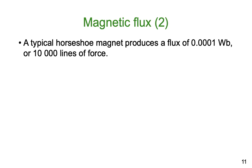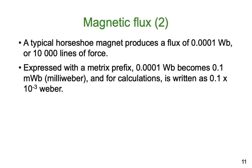A typical horseshoe magnet produces a flux of 0.001 Webers, or about 10,000 lines of force. Expressed with a prefix, 0.001 Webers becomes 0.1 milliWebers — just using engineering notation. Our 0.001 Weber: move the decimal point three places and we can now talk in milliWebers, so it becomes 0.1 milliWebers. For calculations it's simply written as 0.1 times 10 to the minus 3, because times ten to the minus 3 represents millis — thousandths.